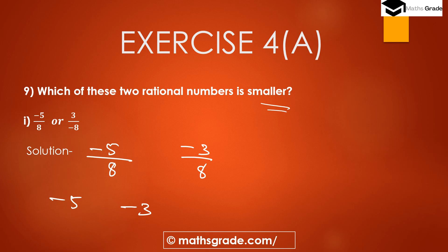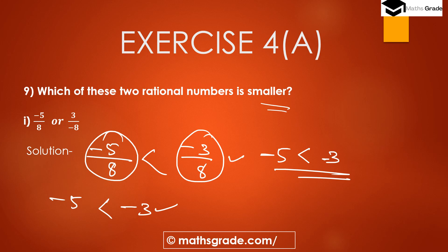When comparing two negative integers, the one with the bigger absolute value is always smaller. Here, comparing positive integers, 5 is greater than 3. When we place negative signs on both, minus 5 is less than minus 3, because the bigger integer with a negative sign is always less than the smaller integer with a negative sign. So minus 5 is less than minus 3, meaning minus 5 divided by 8 is less than minus 3 divided by 8. Therefore, the smaller rational number is minus 5 divided by 8.